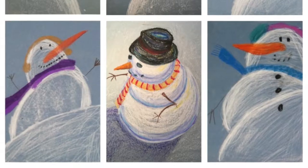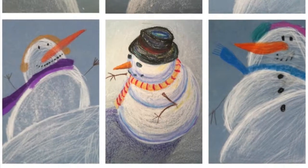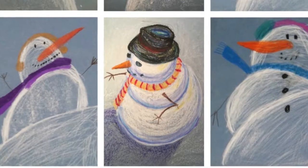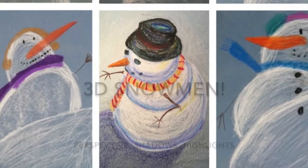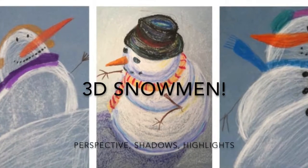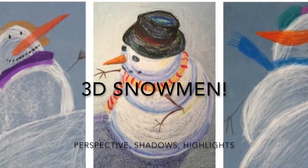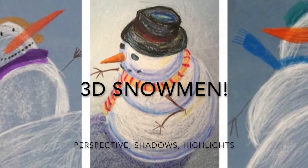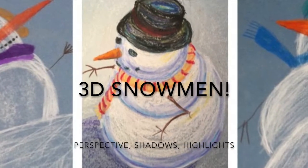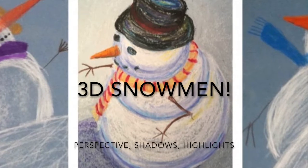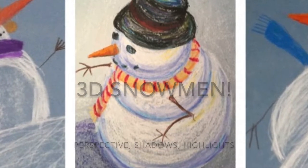Greetings my most wonderful art students. Today I am going to walk you through creating a drawing of a snowman, but one that specifically looks three-dimensional. Now we are using three vocabulary terms here to create our snowman to make them look three-dimensional. Number one is something called perspective, number two shadows, and number three highlights.